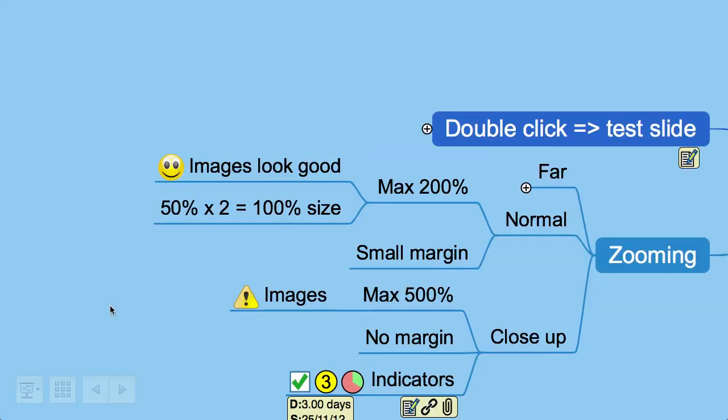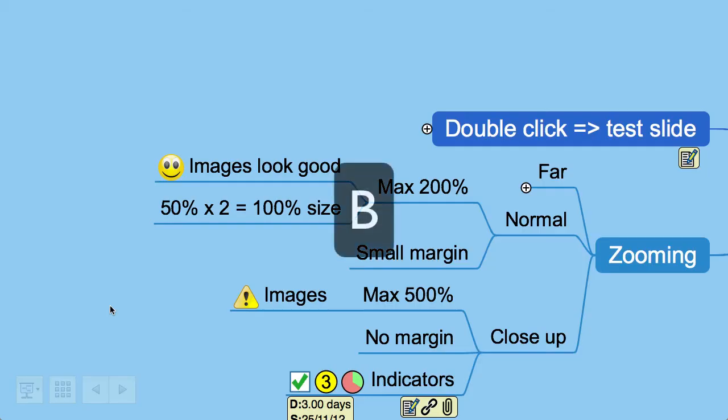If you're in the middle of a presentation and want to stop and hide the mind map so as to not distract people, you can cover the presentation with a white screen or black screen. To cover with white, press W, or to cover with black, press B. To return to the presentation, just click anywhere or press any key.